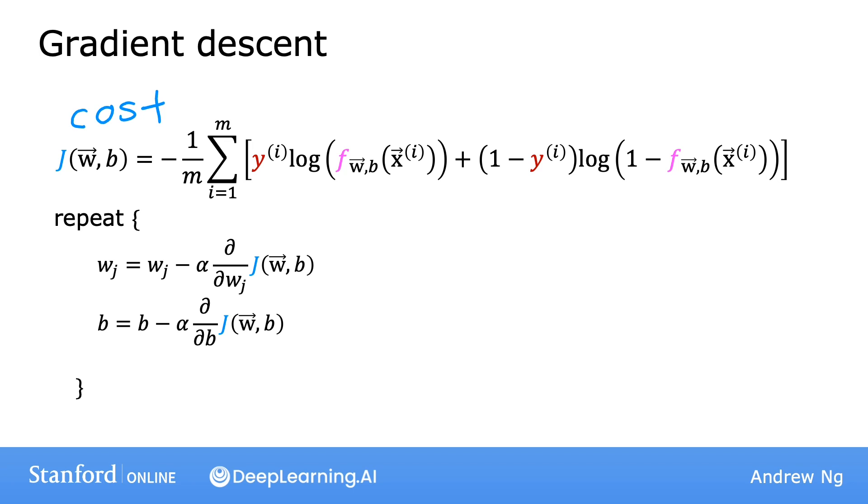Let's take a look at the derivative of j with respect to w_j, this term up on top here, where as usual, j goes from 1 through n, where n is the number of features. If someone were to apply the rules of calculus, you can show that the derivative with respect to w_j of the cost function capital j is equal to this expression over here,